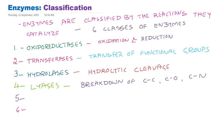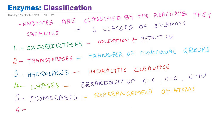The fifth class of enzymes are called isomerases. Isomers have the same molecular formula but differ in their structure. These enzymes help in the rearrangement of atoms within the same molecule — one isomer is converted to another, for example glucose 6-phosphate converted to glucose 1-phosphate, or glucose 1-phosphate converted to fructose 1-phosphate. These enzymes are all named isomerases and belong to class 5.